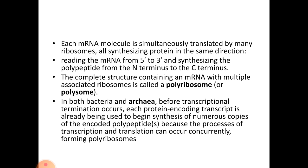Each mRNA molecule is simultaneously translated by many ribosomes, all synthesizing proteins in the same direction — reading the mRNA from 5' to 3' and synthesizing the polypeptide from the N-terminus to the C-terminus. The complete structure containing an mRNA with multiple associated ribosomes is called polyribosomes or polysomes. In both bacteria and archaea, before transcriptional termination occurs, each protein-encoding transcript is already being used to begin synthesis of numerous copies of the encoded polypeptides, because the processes of transcription and translation can occur concurrently, forming polyribosomes.